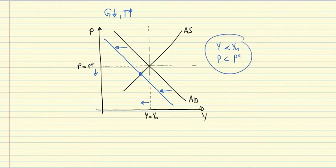Again, this blue point here is a short run equilibrium and the question is how do we get adjustment to a new medium run equilibrium?